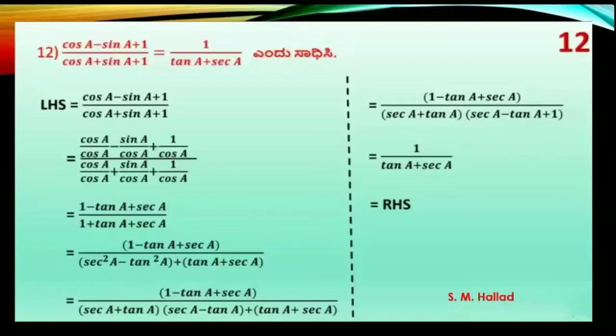The first question is: cos minus sin plus 1, divided by cos plus sin plus 1, is equal to 1 divided by tan. This is the expression we need to prove.